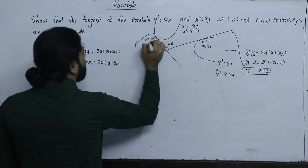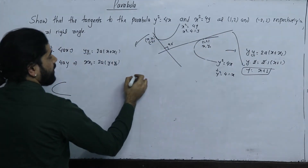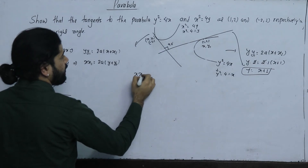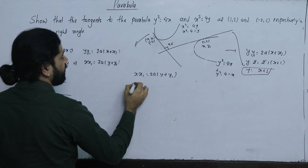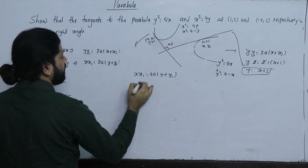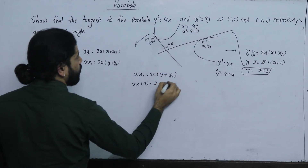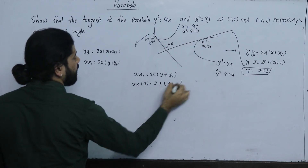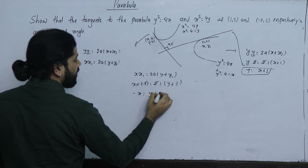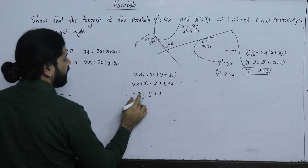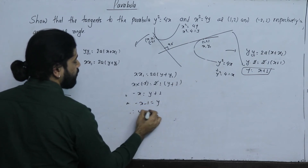Substituting x1 = -2 and 2a = 1 into x·x1 = 2a(y + y1): x×(-2) = 1×(y + 1), so -2x = y + 1, giving minus x minus 1 equals y, therefore y = -x - 1.